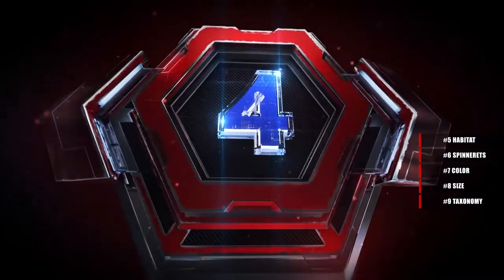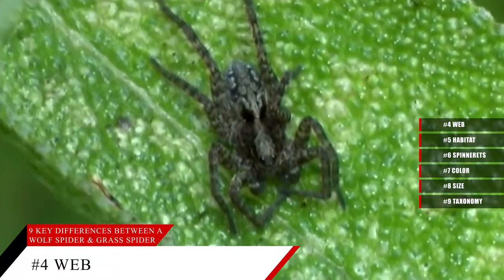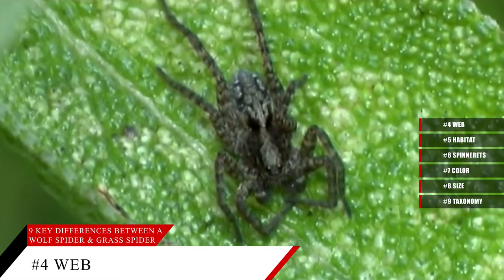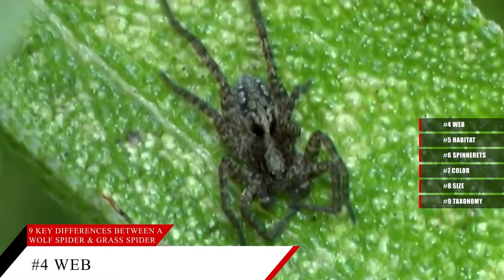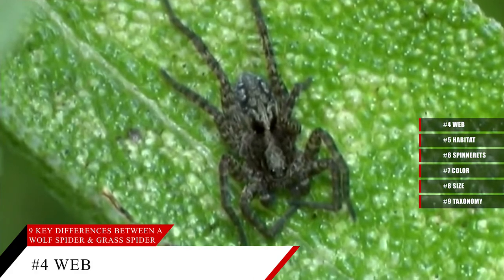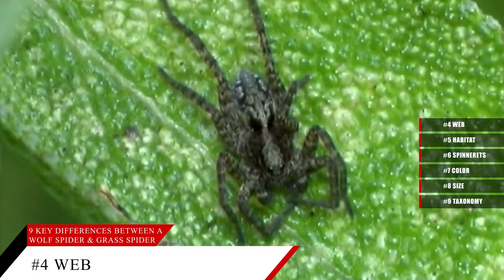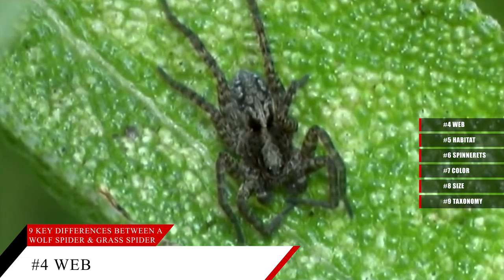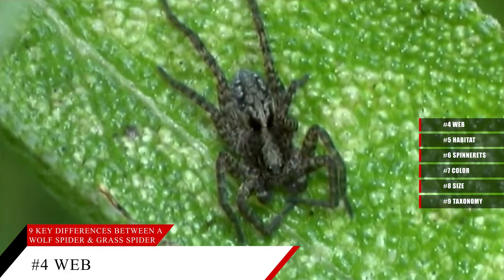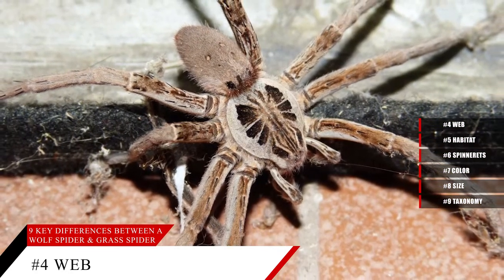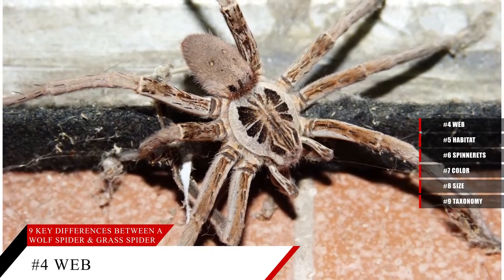Key Difference Number 4 – Web. It's a commonly held belief that all spiders weave webs. While this is mostly accurate, it does not hold true in every circumstance. For example, wolf spiders do not weave webs. Instead, they live in burrows in the ground and hunt by ambushing and chasing down their prey. They kill by leaping onto their prey and sinking their fangs into their victims, immobilizing them. Grass spiders, on the other hand, act more like typical spiders, building webs for their nests and to hunt. However, unlike most spider webs, grass spider webs are not sticky. Instead, the prey wanders inside the webs, and grass spiders will corner and leap on their victim.